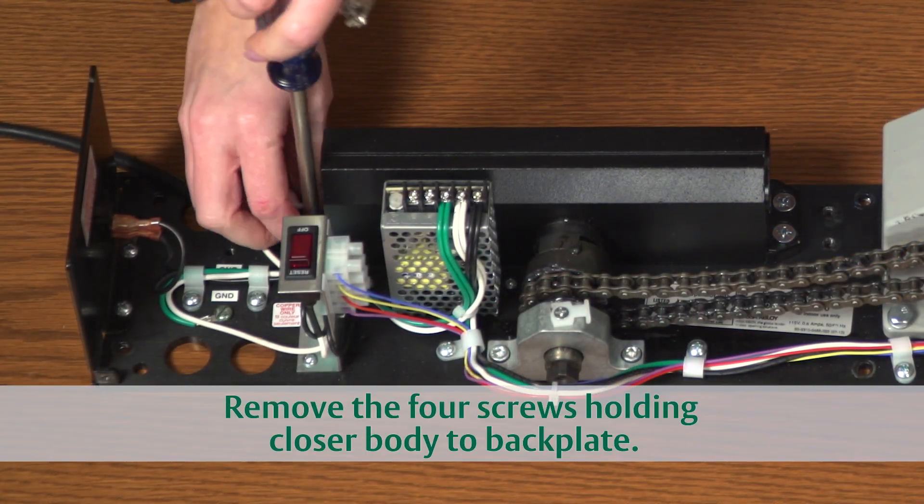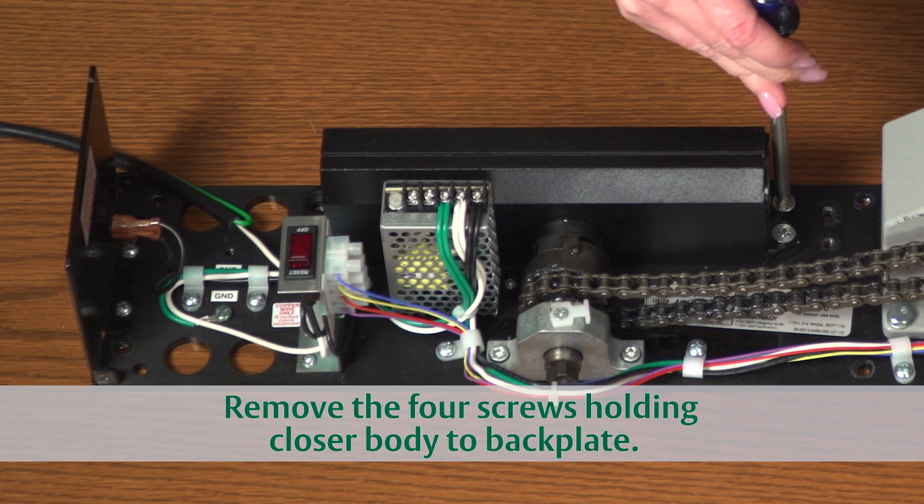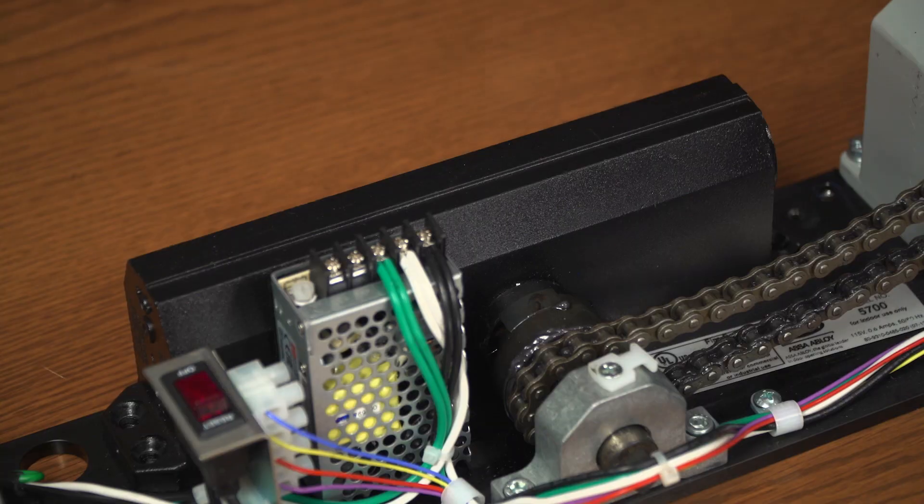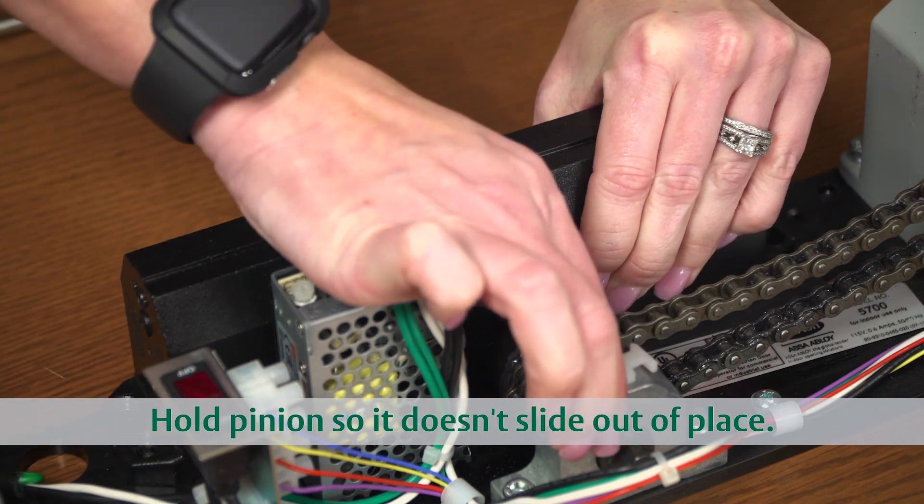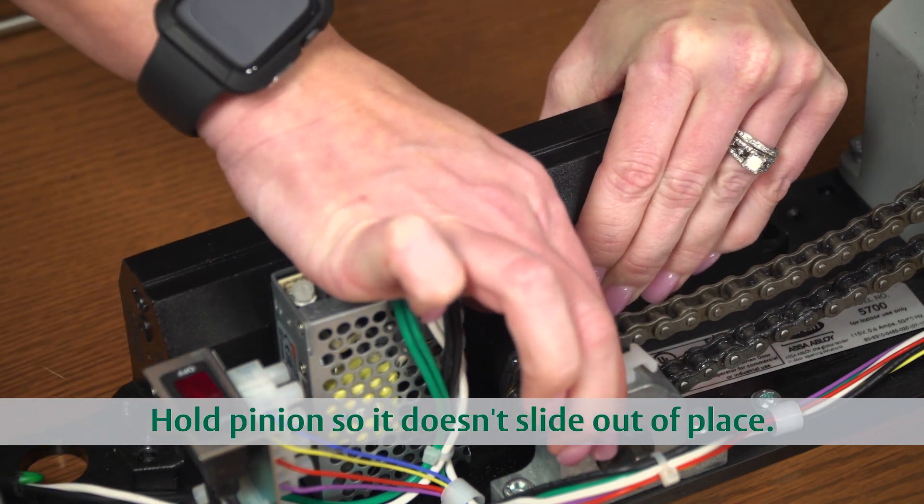Start by removing the four screws holding the closer body in place. Carefully remove the closer body from the pinion extension. It's a good idea to hold the pinion extension so it doesn't pull out of place.